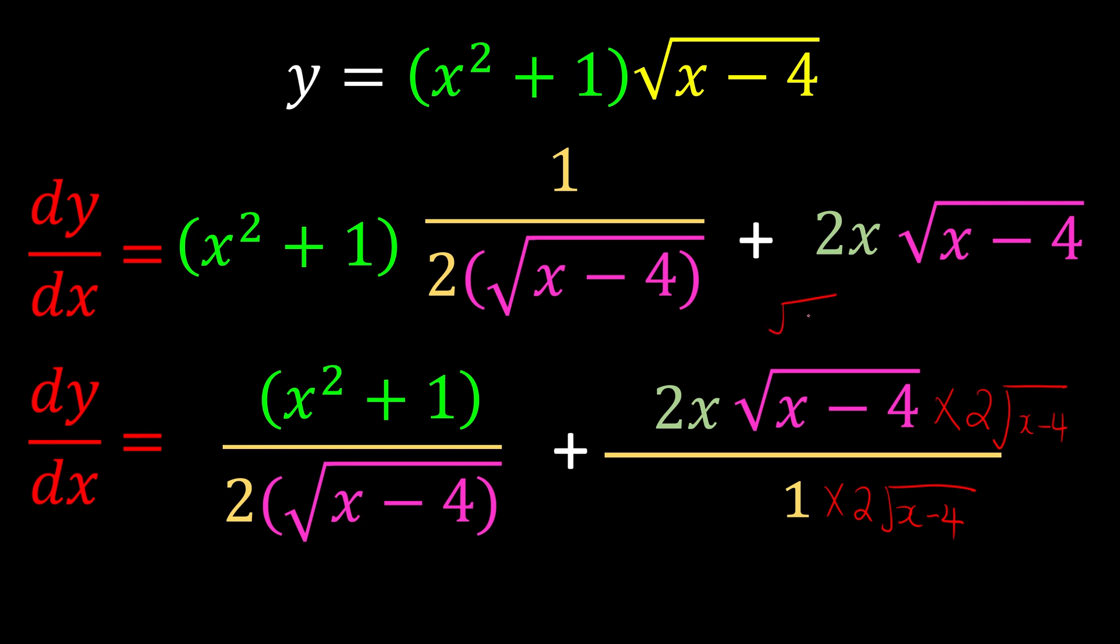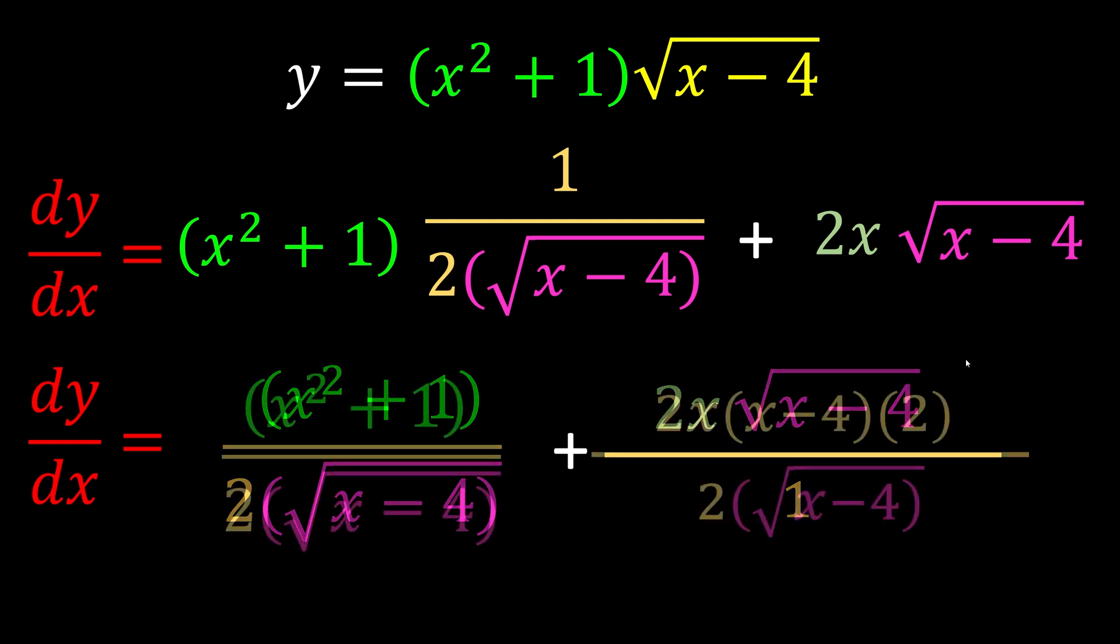But just for a reminder, when you have √(something) times √(something), you will get just whatever is inside the root. Same thing for this one. √(x - 4) times √(x - 4) is supposed to just get x - 4.